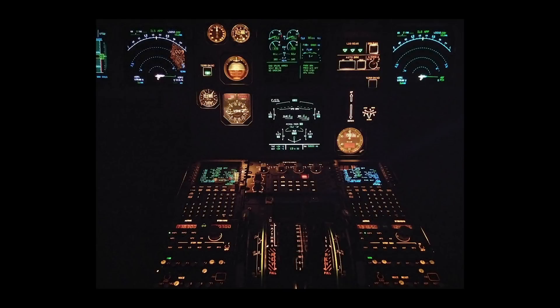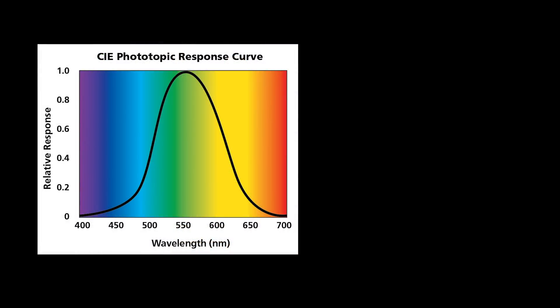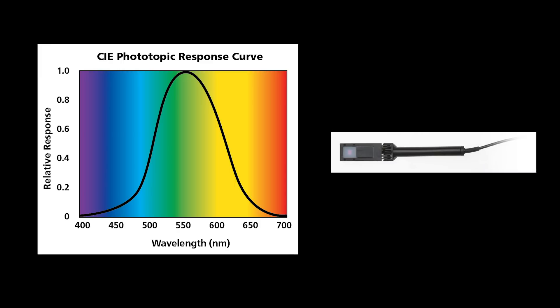For photometric applications, where a human eye will be the end user of the light, measurements need to be done using the photometric system of units, which are adjusted to match the spectral sensitivity of the human eye. Ophir's PD300CIE measures illuminance, the photometric equivalent of power density on a surface.